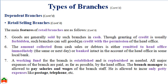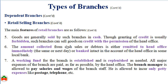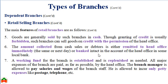Branches are generally not allowed to buy goods locally from the open market, as goods are provided by the head office. Goods are generally sold by the branch in cash, but sometimes credit sales are permitted with permission from the head office. The amount collected from cash sales or collected from debtors should be remitted to the head office immediately or deposited to the bank of the head office.